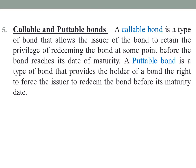Next is callable and putable bonds. A callable bond is a type of bond that allows the issuer of the bond to retain the privilege of redeeming the bond at some point before the bond reaches its date of maturity. A putable bond is a type of bond that provides the holder of a bond the right to force the issuer to redeem the bond before its maturity date. So with a callable bond, the company has the redemption option, and with a putable bond, the bond holder has the redemption option.